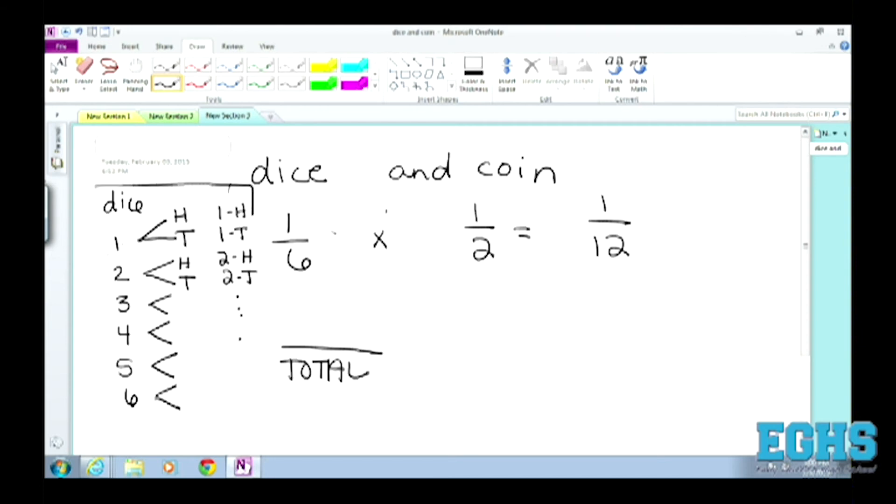So yeah, but either way, any time that you're finding the probability of two separate events, what you can do is multiply those two probabilities together and get you the probability of both of those things happening. So probability would be one twelfth.